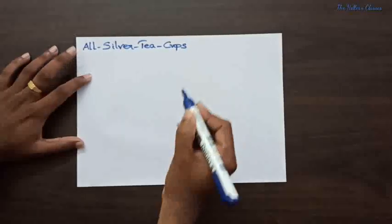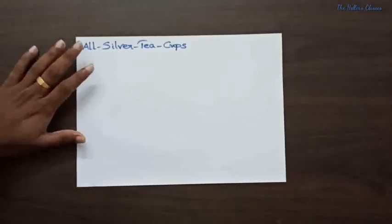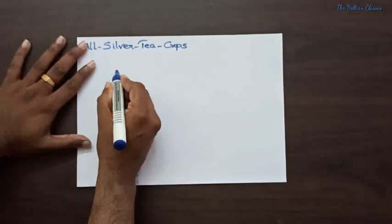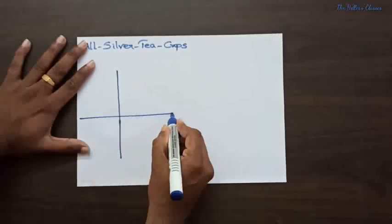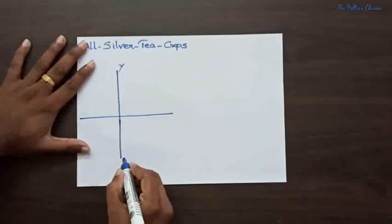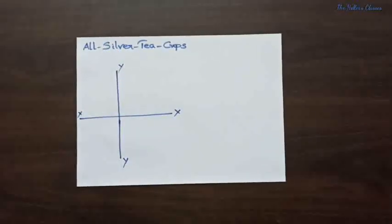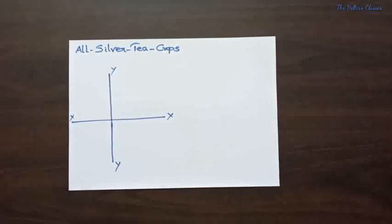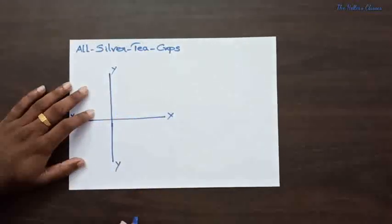In this video I'm proceeding with 'All Silver Tea Cups' — a basic mnemonic from the trigonometric part. All Silver Tea Cups is very helpful for solving many trigonometric problems. 'All' means all parameters are positive in the first quadrant. 'Silver' means only sine is positive in the second quadrant. 'Tea' means tan and cot are positive in the third quadrant. 'Cups' means cos and secant are positive in the fourth quadrant.